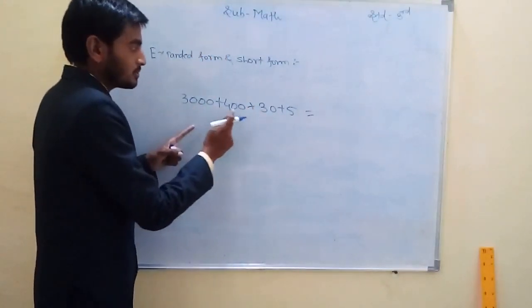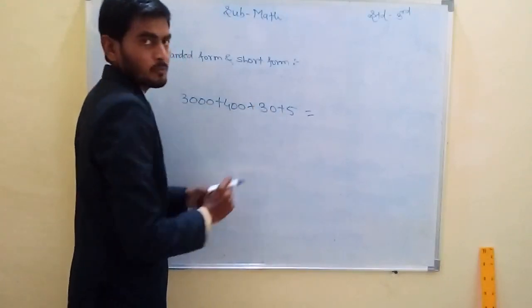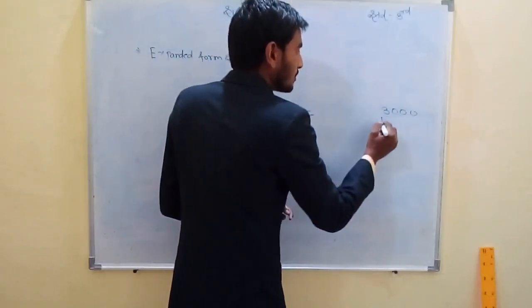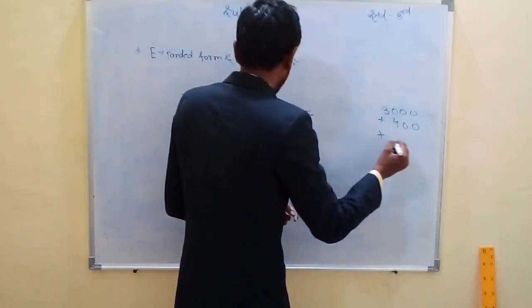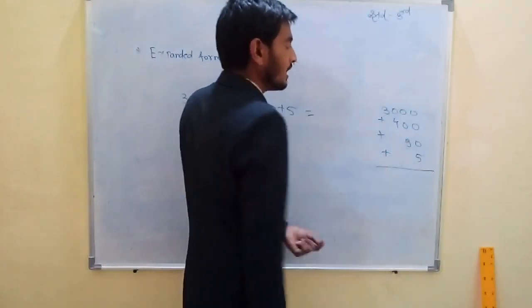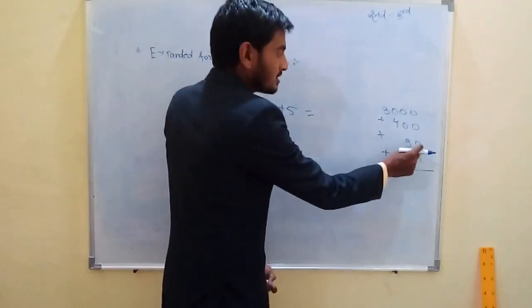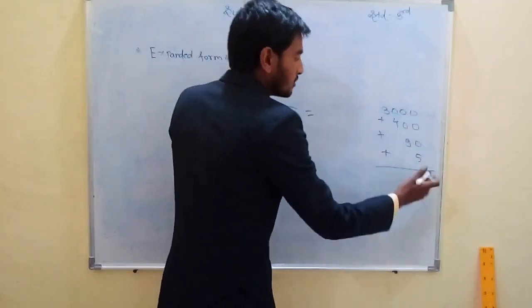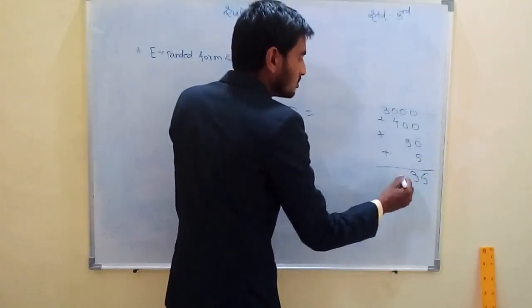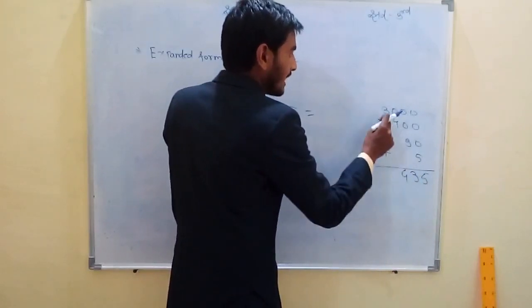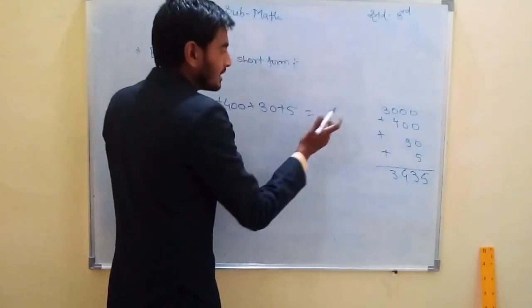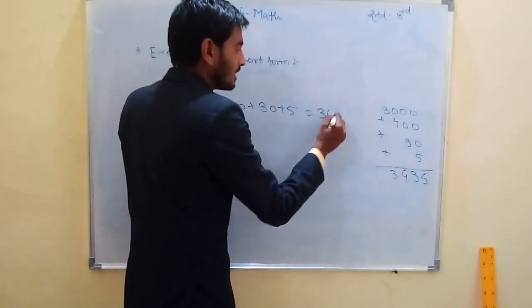3,000 + 400 + 30 + 5. What is the addition? 5 + 0 + 0 + 0 = 5. 3 + 0 + 0 = 3. 4 + 0 = 4. And last one, 3. Means our short form is 3,435.